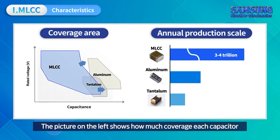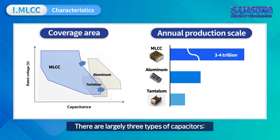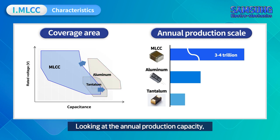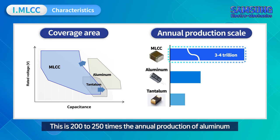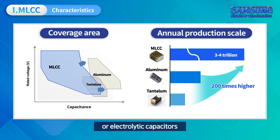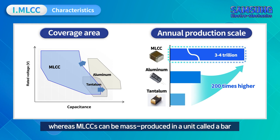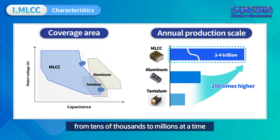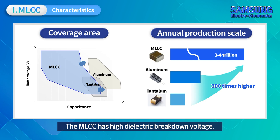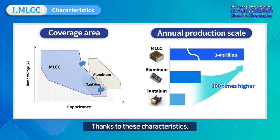There are largely three types of capacitors: MLCC, tantalum, and aluminum electrolytic capacitors. Looking at annual production capacity across all manufacturers, up to 4 trillion MLCCs are produced — 200 to 250 times the annual production of aluminum or electrolytic capacitors. This is because mass production is possible; MLCCs can be mass produced in units called bars, from tens of thousands to millions at a time. The MLCC also has high dielectric breakdown voltage, no polarity, and lower heat dissipation in frequency bands, which means the range of MLCC applications is gradually expanding.